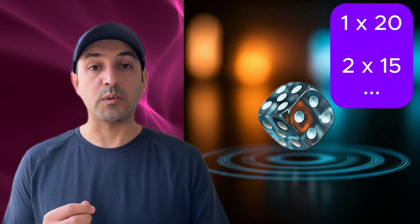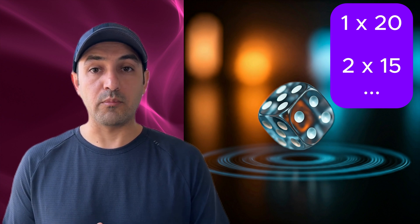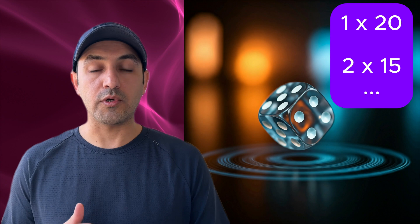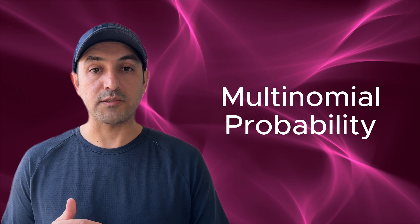Let's now see what multinomial distribution can do for us in terms of an example. Imagine you have a six-sided dice and you throw it 100 times. Every time you roll the dice, you see one of the six outcomes from one to six. Now let's say you want to figure out the probability of getting a specific combination of outcomes. For example, you might wonder what are the chances of rolling the number one exactly 20 times, the number two exactly 15 times, and so on for the other numbers. This is the type of problem that multinomial probability can solve.